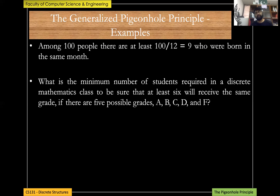Here's a question on the same note: what is the minimum number of students required in a discrete mathematics class to be sure that at least six will receive the same grade, if there are five possible grades — A, B, C, D, and F? Pause the video and try to answer it.